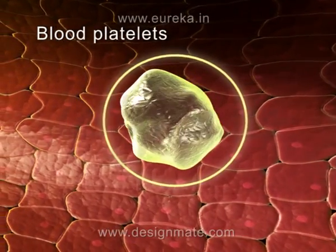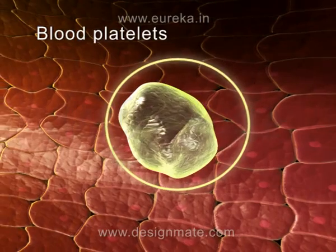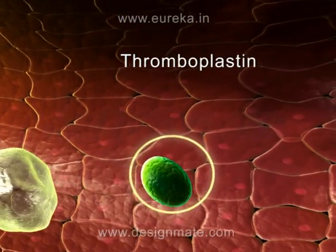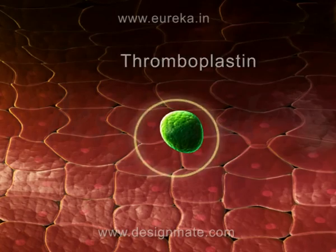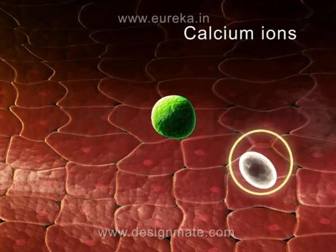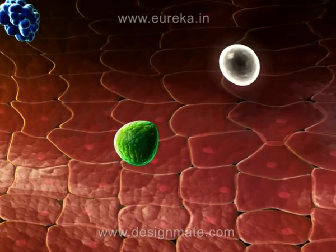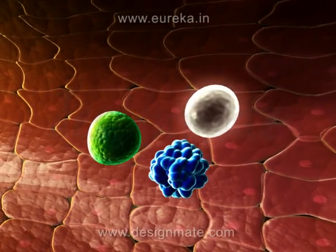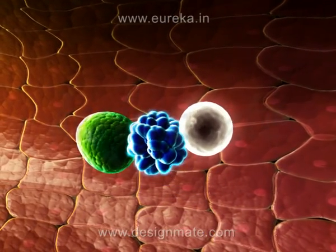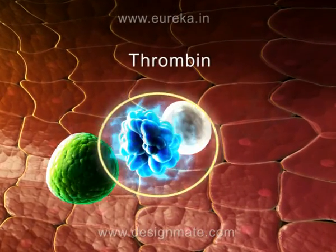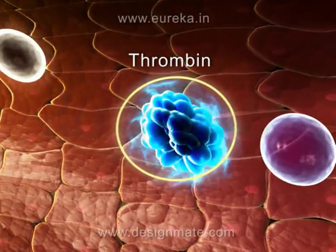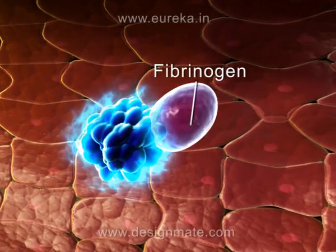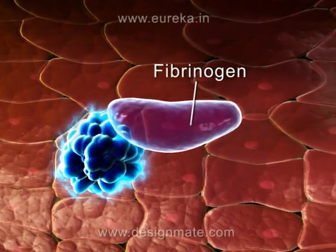The blood platelets release a substance called thromboplastin. In the presence of thromboplastin and calcium ions, the prothrombin present in the blood gets converted into thrombin. This thrombin now catalyzes the conversion of fibrinogen into fibrin.